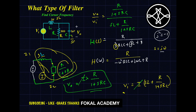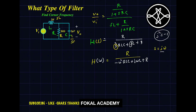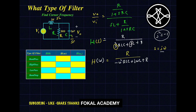Now we can easily define what type of filter it is using a table. The table has four filter types: band pass filter, high pass filter, low pass filter, and band stop filter. We use binary values representing the transfer function magnitude at ω=0 and ω=∞. The pairs are: 0,0 for band pass; 0,1 for high pass; 1,0 for low pass; and 1,1 for band stop.